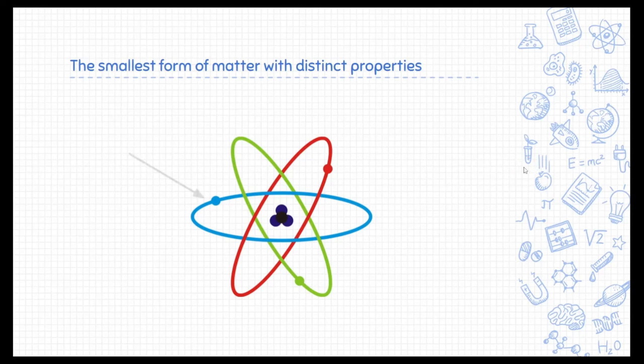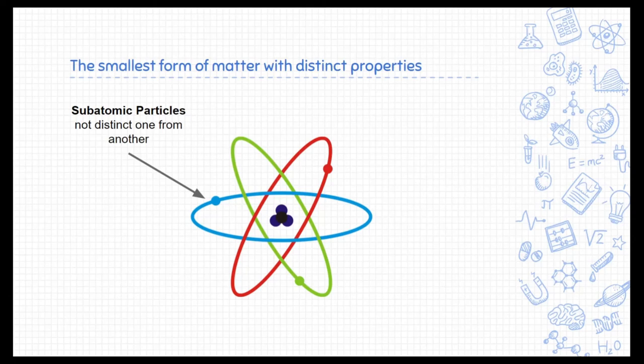Atoms themselves are made of even smaller particles called subatomic particles. And we'll learn about the protons, the neutrons, and the electrons in a later module. But the thing about these subatomic particles, there's really no distinction from one to another. And I mean comparatively. One electron is the same as another electron. And one proton is the same as any other proton. So there's no distinct properties between the subatomic particles. Atoms are where we first get distinct properties that make up all matter.